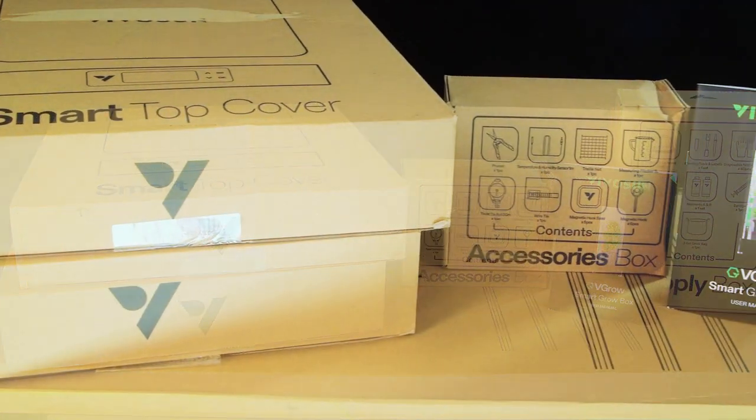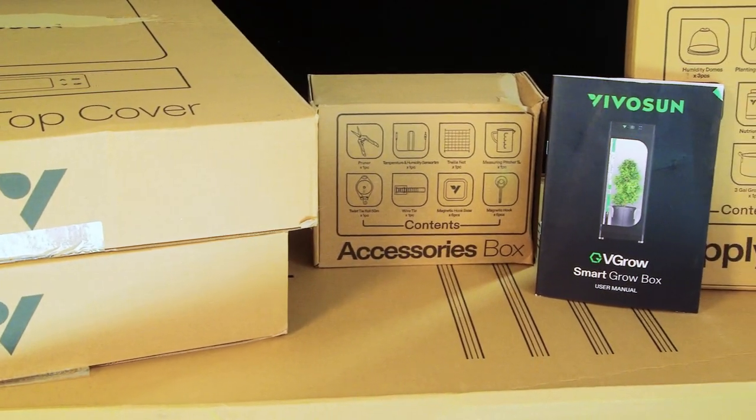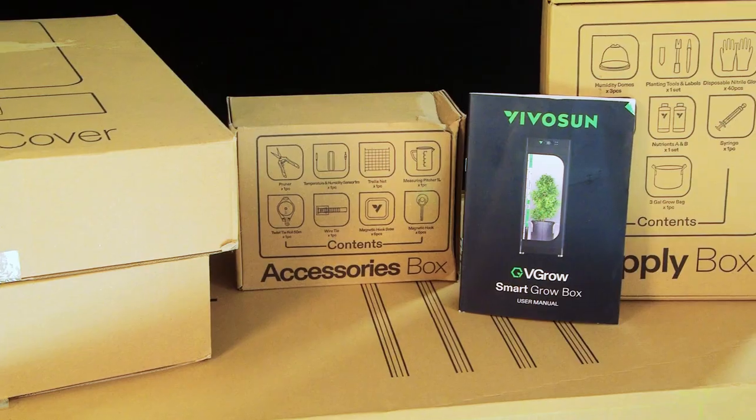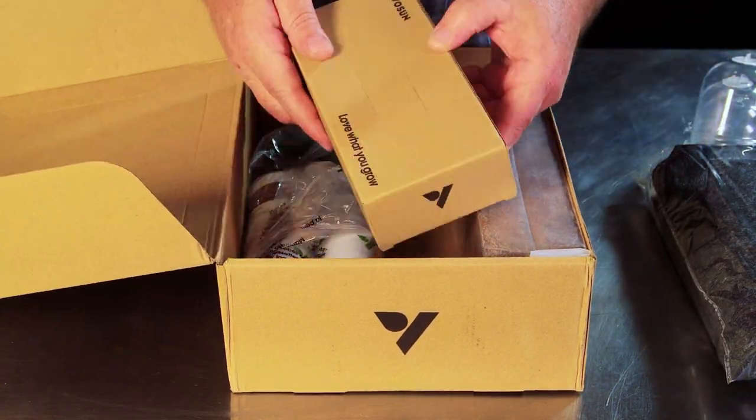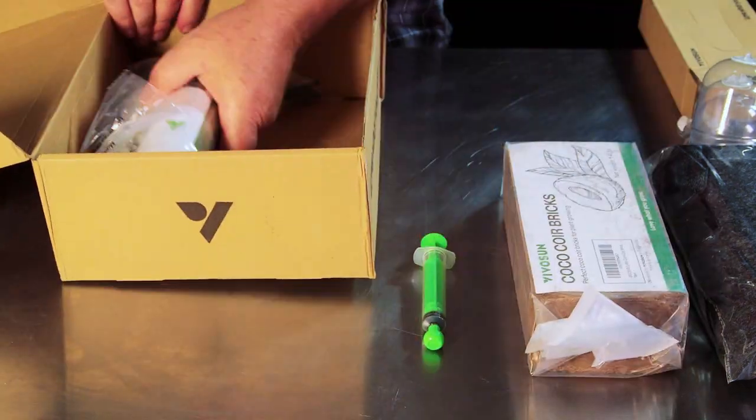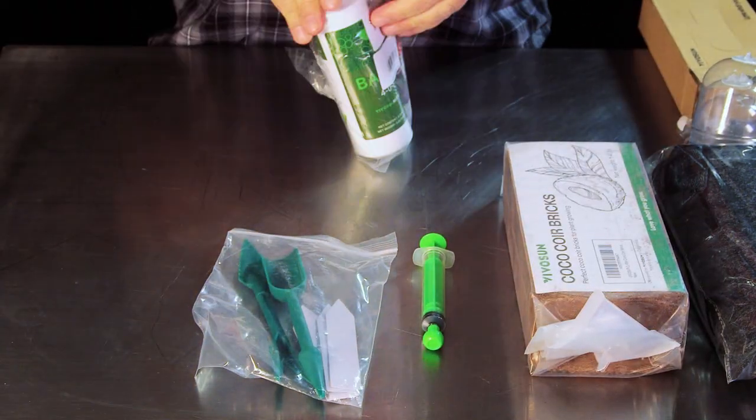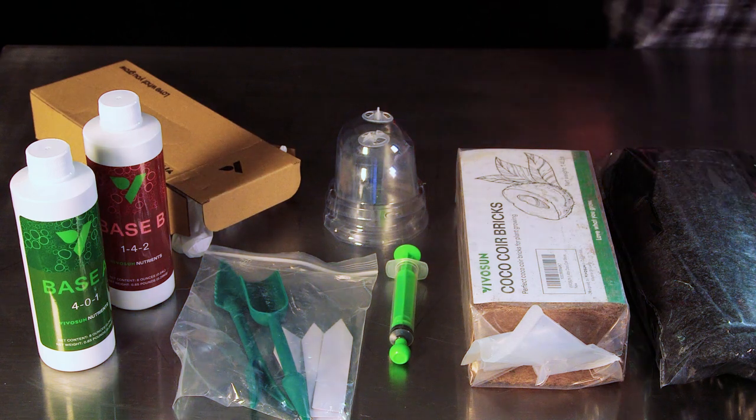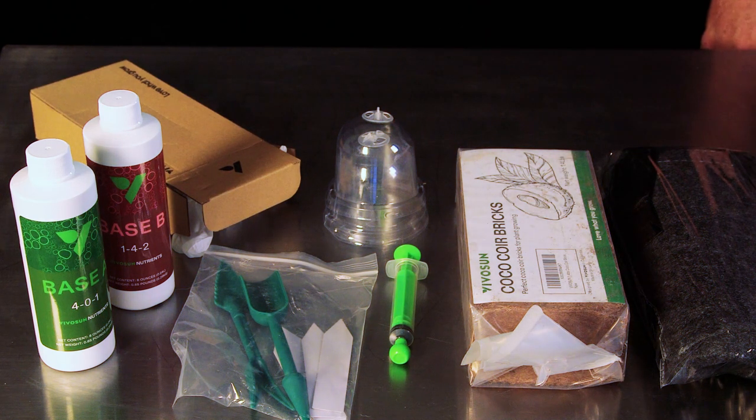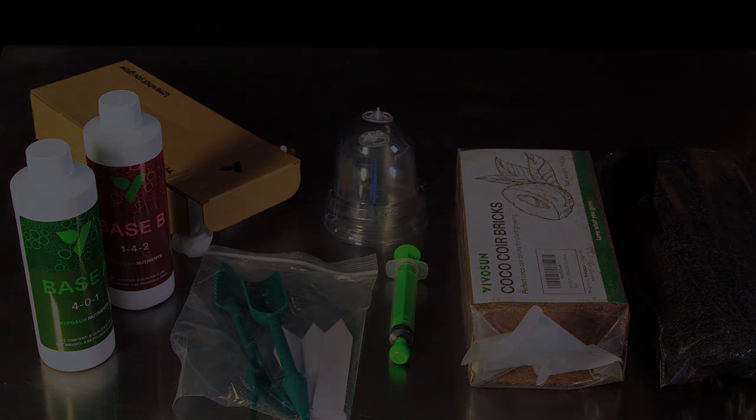There's also some accessories included, an instruction guide, and a supply box. Inside the supply box you have the felt grow bag, coco coir block, some little domes for humidity for seedling starting, a syringe, nutrient bases. It's got a lot that you need to grow, so there's a lot included in this box.